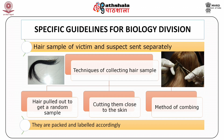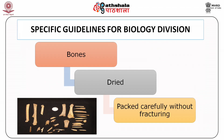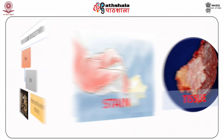If there are hair samples on the victim, accused, or on a weapon, sample hair from the victim as well as from the suspect should be sent separately in sufficient quantities. Hair may be pulled out to get a random sample; if not feasible, a considerable number of hair should be collected by cutting close to the skin and packed and labelled accordingly. If no other suitable method is practicable, the method of combing may be adopted. Bones collected should be sent after drying, packed carefully without fracturing.